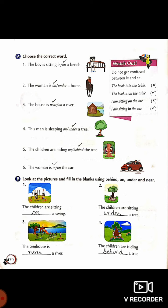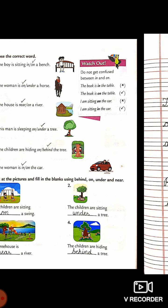In Part B, look at the pictures and fill in the blanks using behind, on, under, and near. The children are sitting on a swing. The children are sitting under a tree. The tree house is near a river. The children are hiding behind a tree.